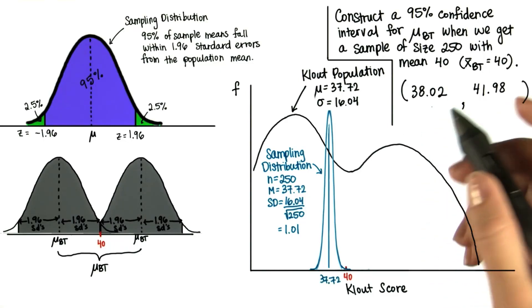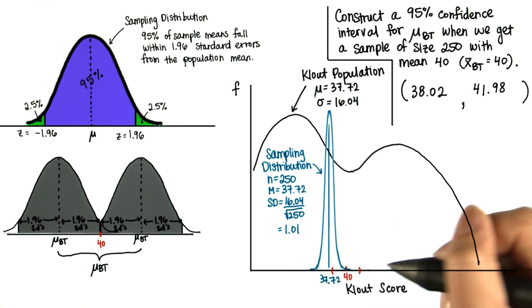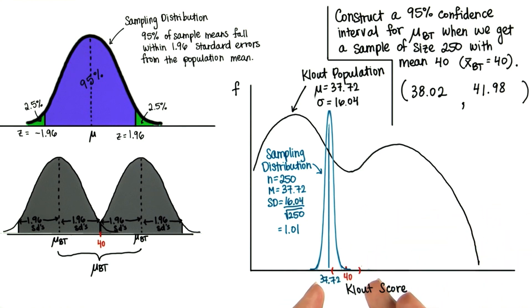So now we have this confidence interval, and it ranges from about 38 to 42. So it's a lot smaller than the one we had calculated when we were basing it off of a sample of size 35.